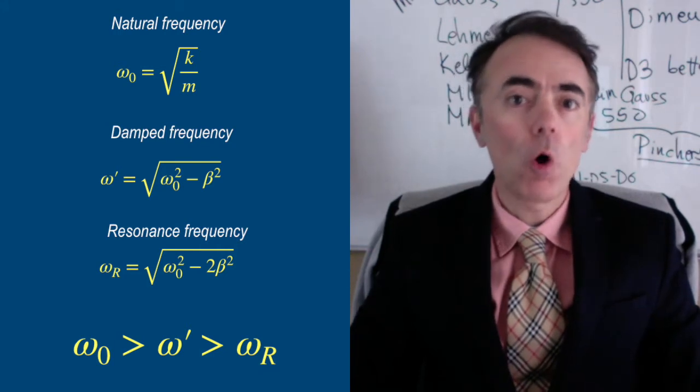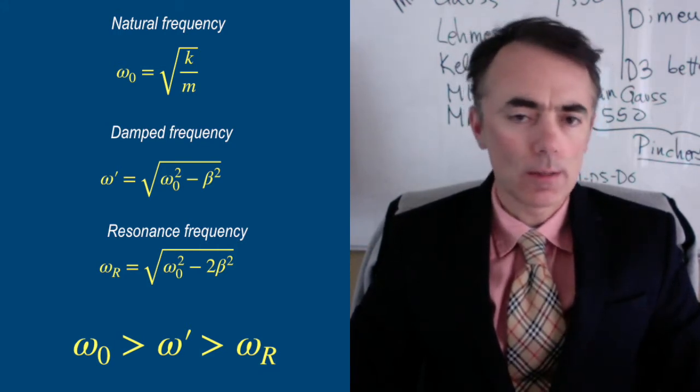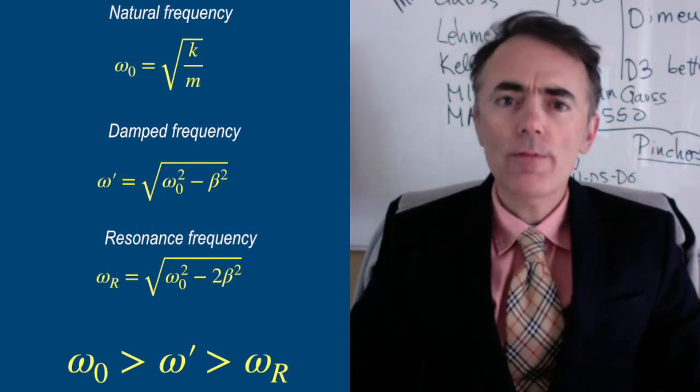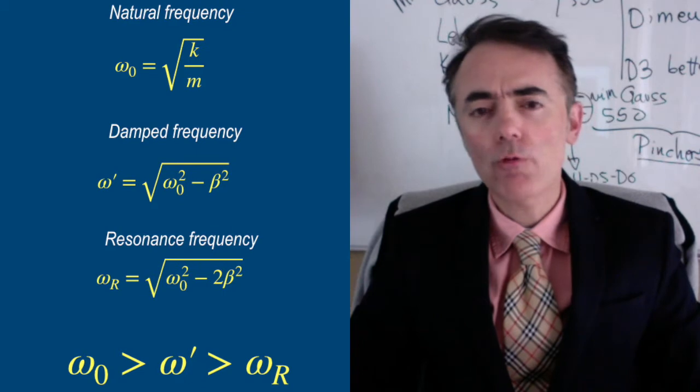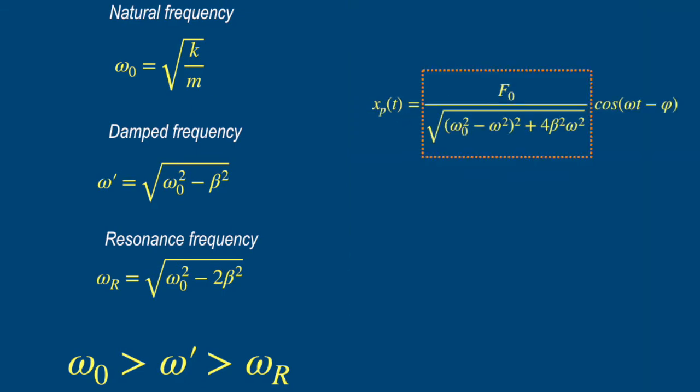Looking at the expressions we can write that for underdamping omega naught is greater than omega prime which is greater than omega of resonance. Remember that for overdamping there are no oscillations for the damped oscillator. If damping is small, beta small, then the resonance frequency tends to the natural frequency. But look at the amplitude of the forced oscillations. The denominator tends to zero and this amplitude tends to infinity.